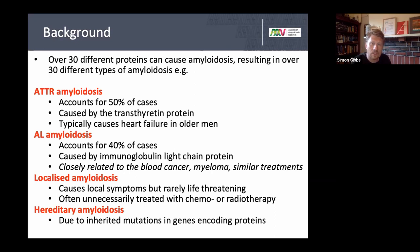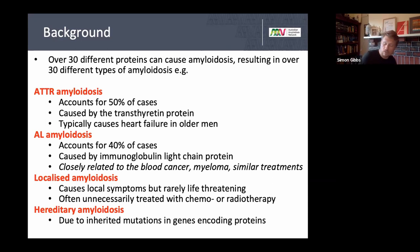There are localized forms of amyloid — in the eyelid, bladder, or tracheal-bronchial regions — which don't require major concern. They just need to be observed or locally excised and outcomes are very good. Hereditary amyloidosis is a specialized area and won't be covered in depth, except in relation to transthyretin.